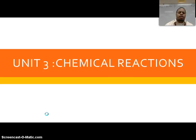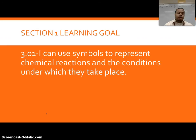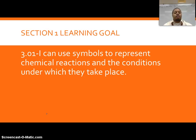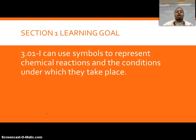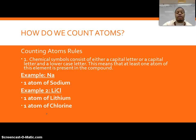We'll start off with our learning goal, which is the same learning goal referenced on your student progress tracking sheet. We want to see how we can use the information in the notes and in the class activities to make sure they're making sense and preparing you for your test. The learning goal is: I can use symbols to represent chemical reactions and the conditions under which they take place — basically, I can look at a reaction and identify its different parts.